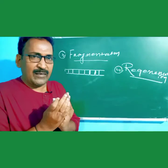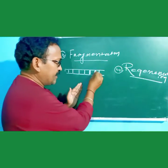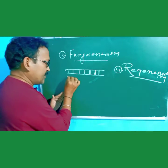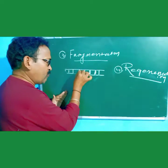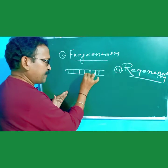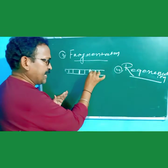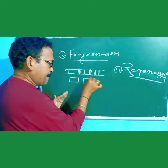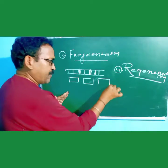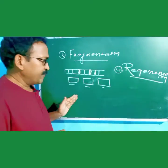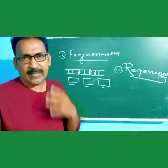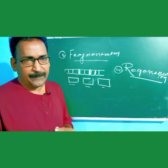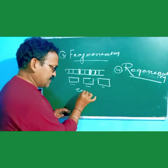By dissolving of the cell wall, the filament gets fragmented into different pieces — here the cell wall dissolves to form separate parts — and each piece or fragment then forms a new organism. This is seen in the case of Spirogyra.